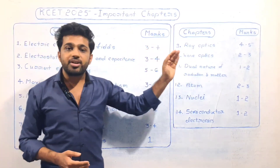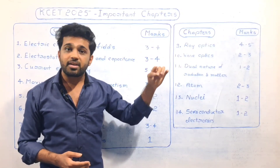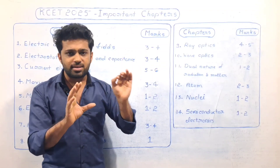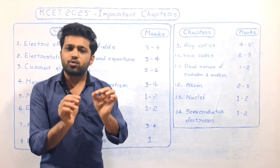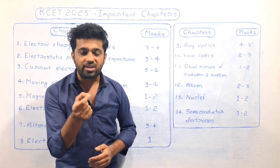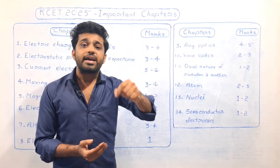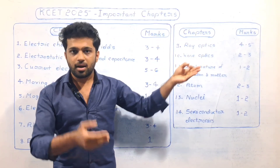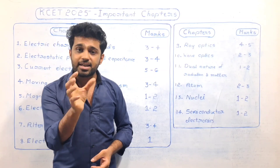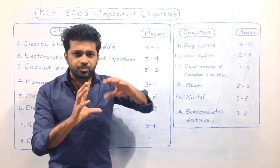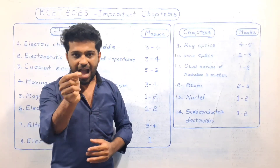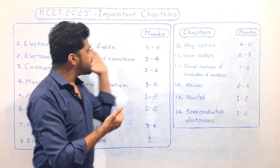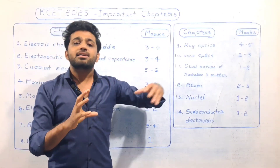Electric Charges and Fields is an important chapter for KCET. Every year, there are 4 marks allocated from this chapter — specifically 3 to 4 marks. There are new focus smart way concepts: Electric Field and Electric Field Lines, Application of Gauss's Law, and Coulomb's Law. These concepts are related, and there are examples from previous test exams in this chapter.